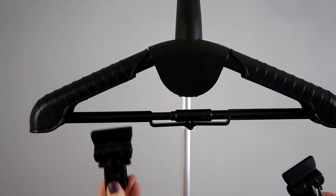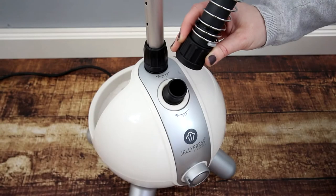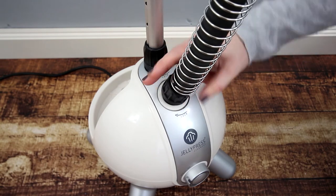Take the clips and clip onto the hanger. Attach the hose to the steamer base and turn the hose connector clockwise and fully tighten.